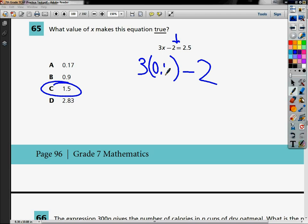So I'm going to try 0.17. So I do 3, parenthesis, 0.17, close the parenthesis, minus 2, and I get negative 1.49. But it's supposed to equal 2.5. So that's not a truth statement with that value in it. Mark that out.